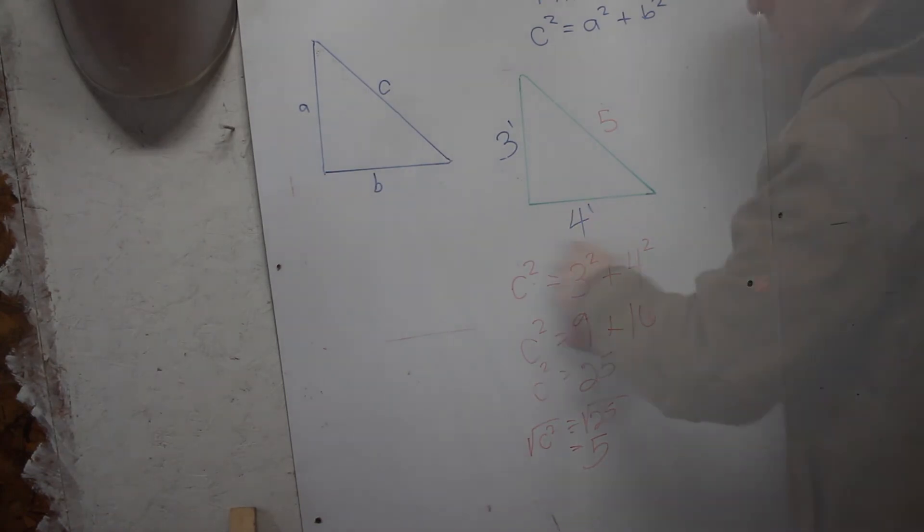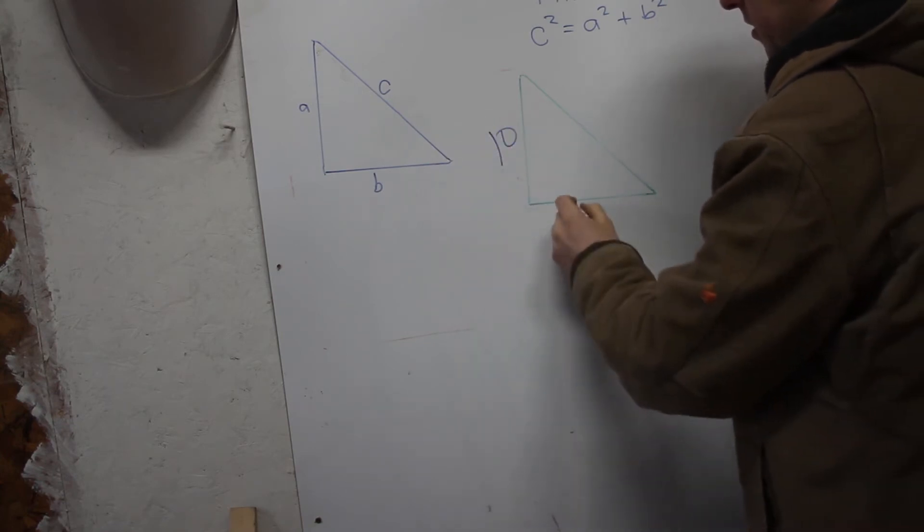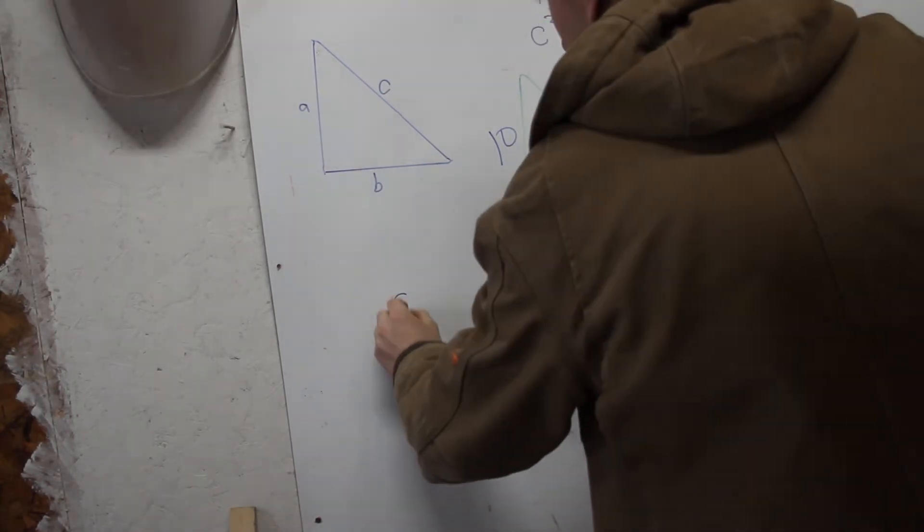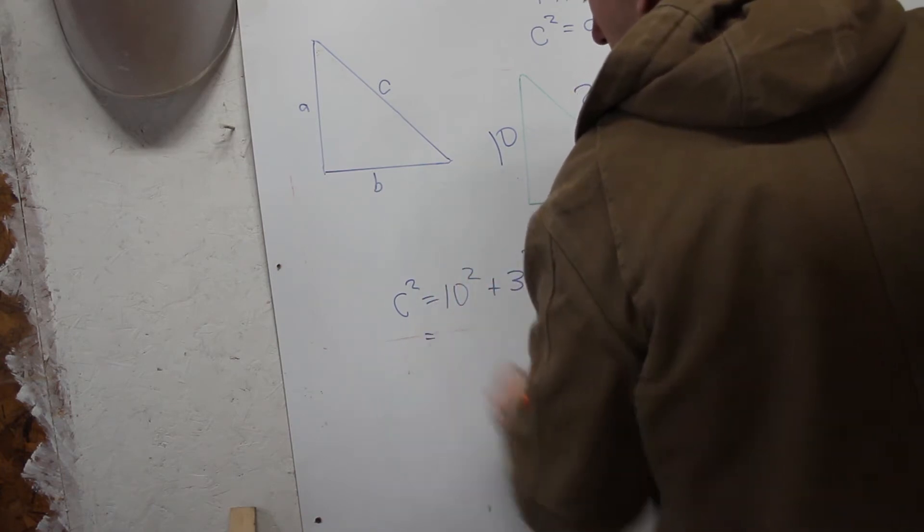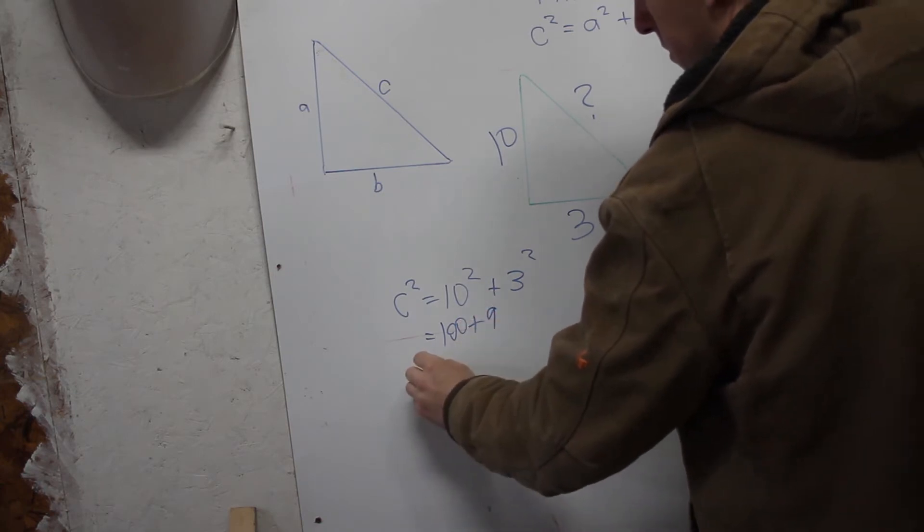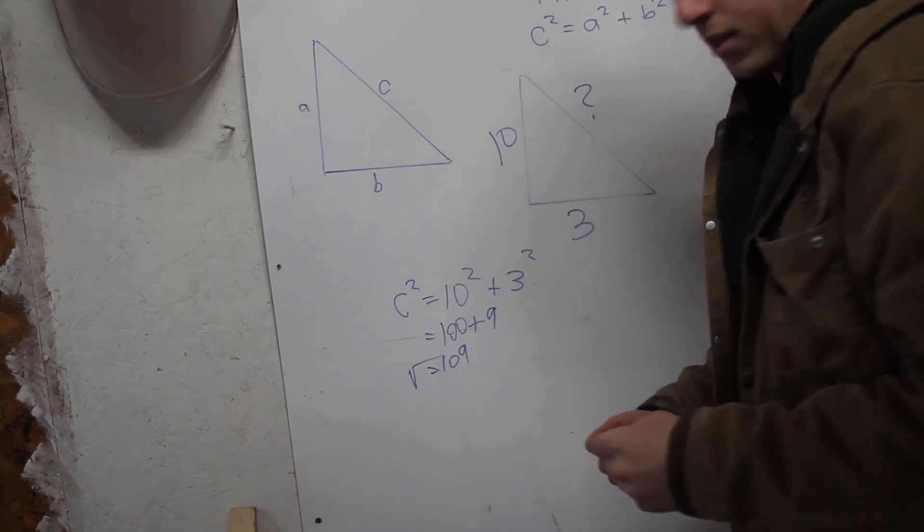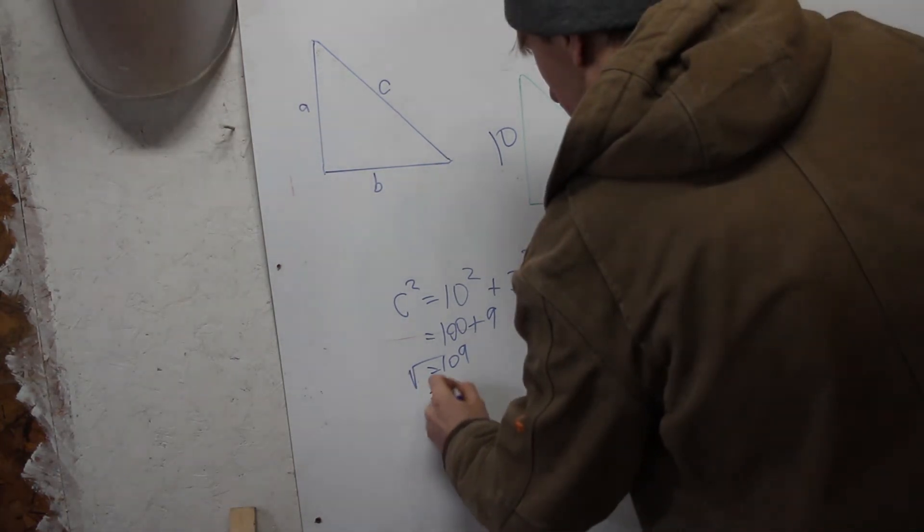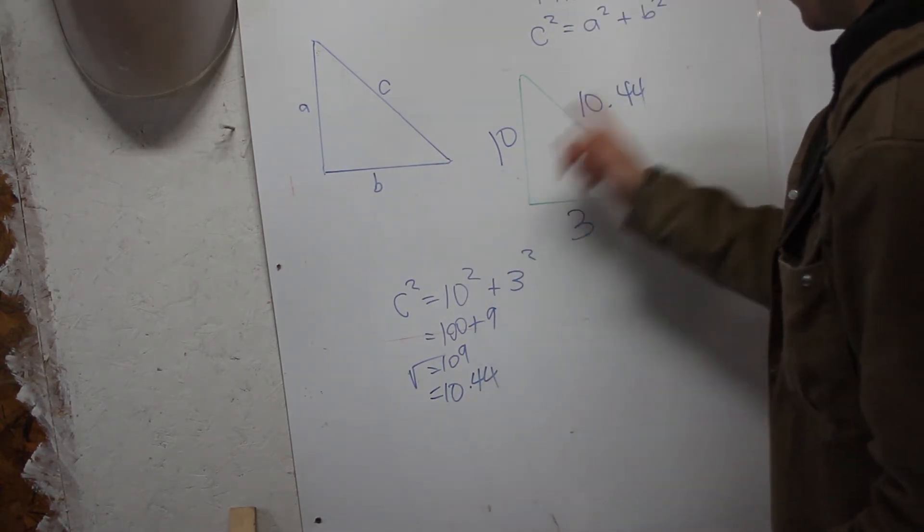Let's do another example. I'm just going to choose some random numbers, so we'll say that the height is 10, the base is 3, and then we have an unknown. So we'll write in the same equation: C squared equals 10 squared plus 3 squared. 10 times 10 is 100, plus 3 times 3 is 9. That's 109. If we do the square root of that - need to get my calculator here - is 10.44. 10.44 of whatever, say inches, whatever base unit you're using.